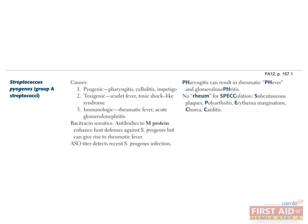Now we'll talk about strep pyogenes, also known as group A strep — a beta-hemolytic, bacitracin-sensitive gram-positive cocci. The key diseases that S. pyogenes causes are pharyngitis (strep throat), glomerulonephritis, and rheumatic fever. Rheumatic fever is a result of untreated S. pyogenes pharyngitis only — not skin or soft tissue S. pyogenes infections such as cellulitis and impetigo.